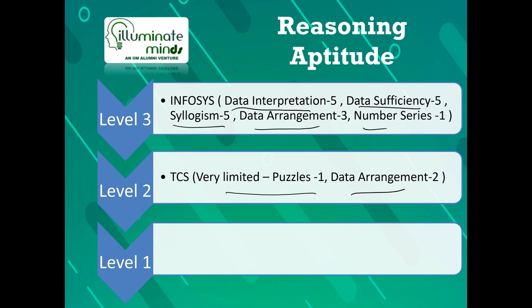Now let's compare the reasoning aptitude sections. For Infosys, there are five chapters to prepare: data interpretation (5 questions), data sufficiency (5 questions), and syllogism (5 questions). The reasoning section is predictable — you will get exactly five questions each from DI, data sufficiency, and syllogism, all to be done in 25 minutes. The cutoff for both companies is roughly 60 percent, though for TCS it can go as low as 50 percent.